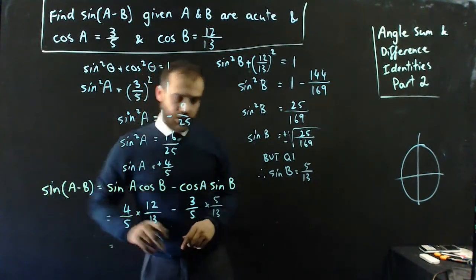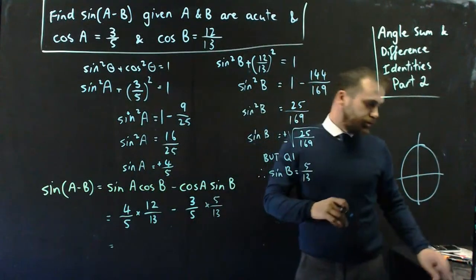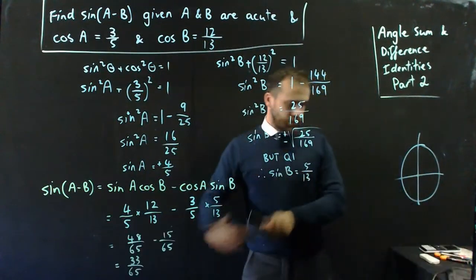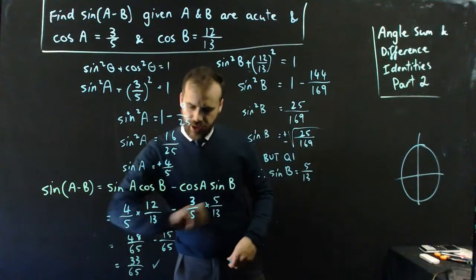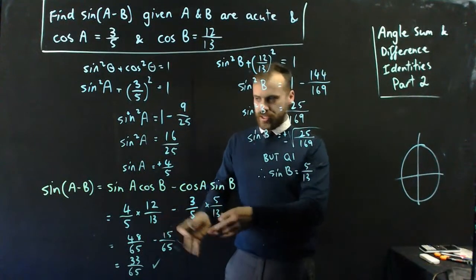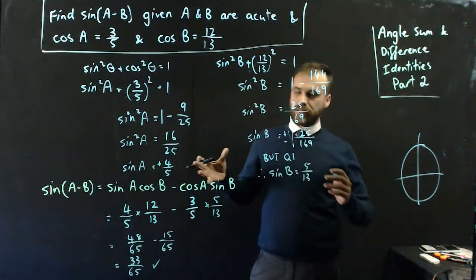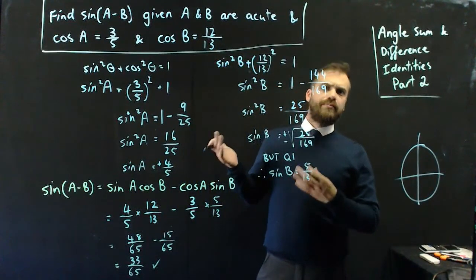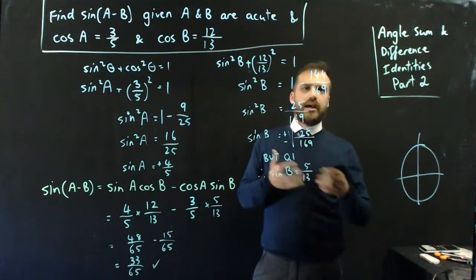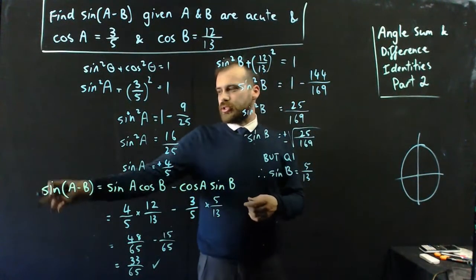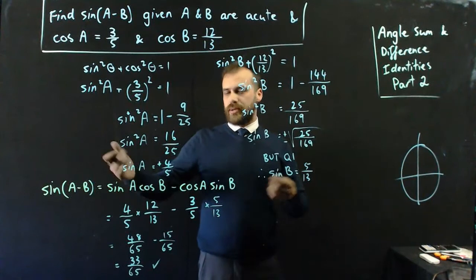All right, we have a final answer, because now we just need to calculate that. 33 on 65. Now, what was that solution? It's sine of a minus b. Now, interestingly, we don't know what a and b are. It doesn't matter, because I don't want to know what a and b are. I just want to know what sine of a minus b is.